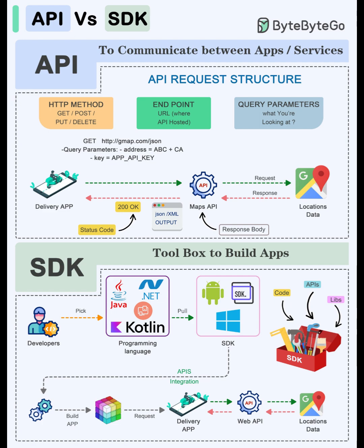The endpoint is the URL of the resource. Parameters shape what's returned: path parameters like /users/42, query parameters like page=2 and limit=50, headers for metadata and auth, and the JSON body for your data. Send the request, receive a status code — 200 OK if all's well — plus headers and a JSON response body. Clean, stateless, predictable.